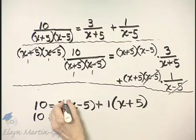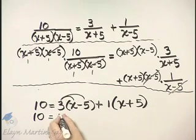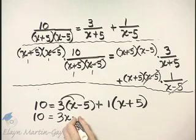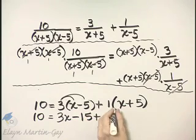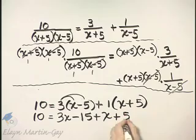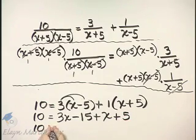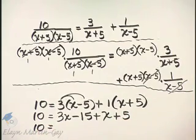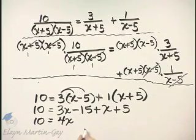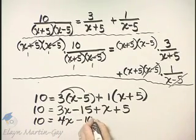Now, let's go ahead and use the distributive property. That's 3x minus 15, 3 times 5, plus 1 times x is x, and then plus 1 times 5 is 5. Let's go ahead and see if we have any like terms. 3x plus x, that's 4x, negative 15 plus 5, that's negative 10.